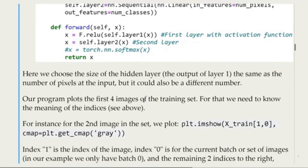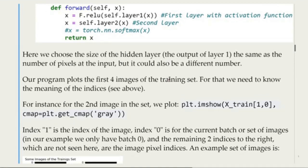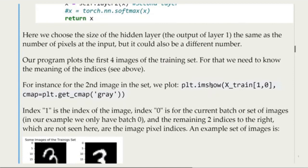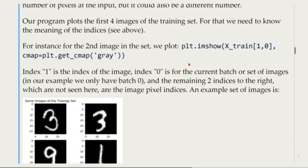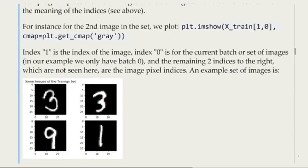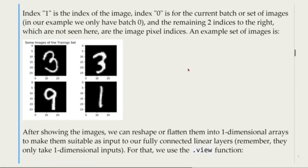Our program will plot the first four images of the training set. For that we need to know the meaning of the indices. For instance, for the second image in the set, we will plot using imshow from pyplot. Index 1 is the index of the image, and index 0 is for the current batch or set of images. In our example we only have batch 0. Then there are two remaining indices to the right which are the image pixel indexes. An example when we plot: we have here four digits. We see that we have from 0 to 28 pixels, and it's a 3, a 3, a 9 and a 1.